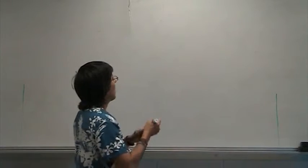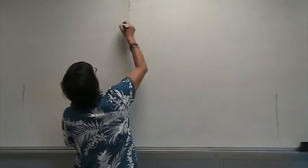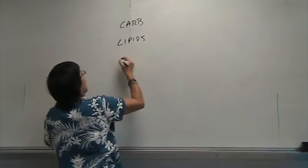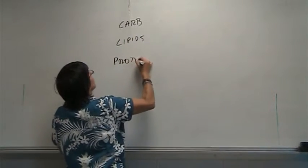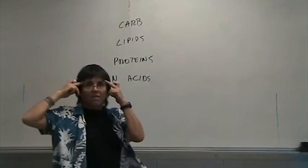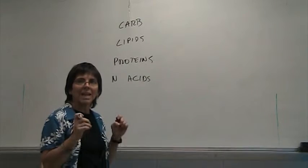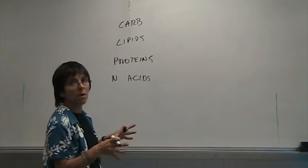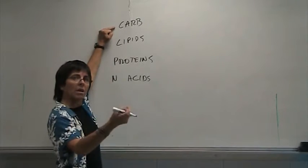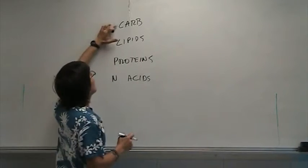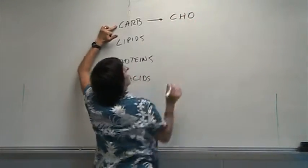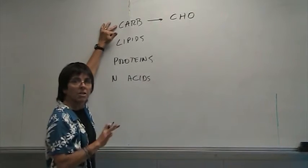One of the things I wanted to review is to bring to your attention that we have studied carbohydrates, lipids, proteins, and nucleic acids. I want you to think about what elements make each one of these molecules. Starting with carbohydrates — if you look at all the carbohydrates on your macromolecules page, you'll see that all carbohydrates are made of carbon, hydrogen, and oxygen.